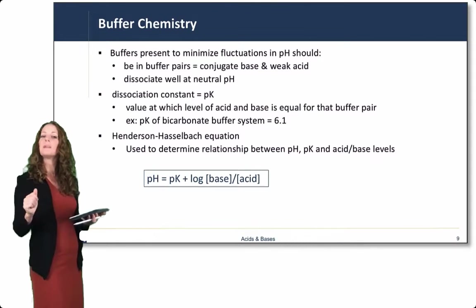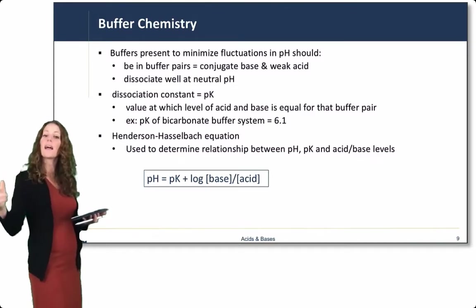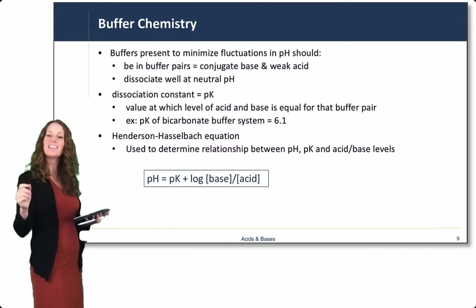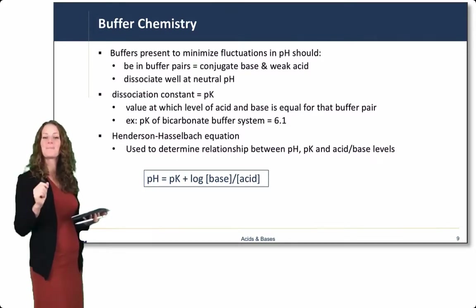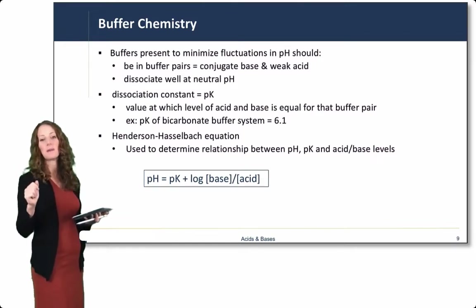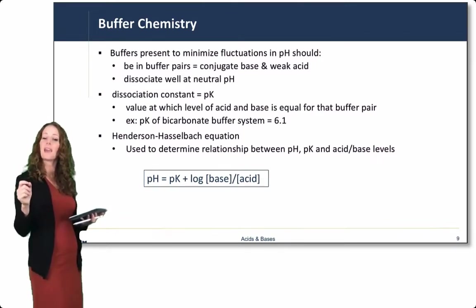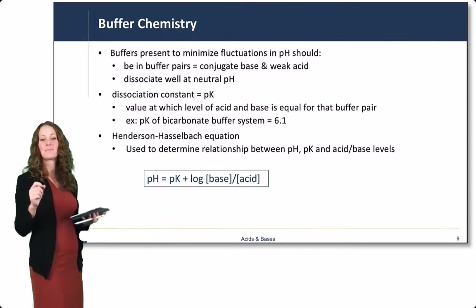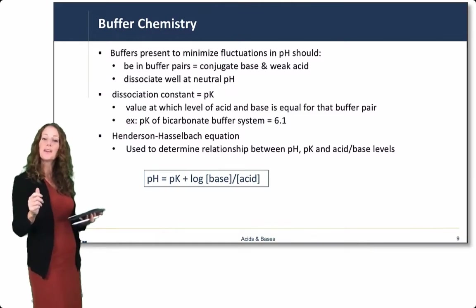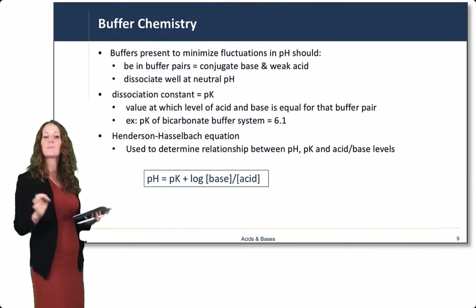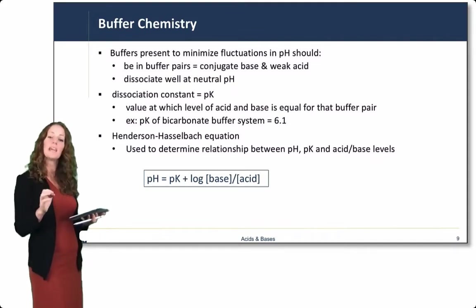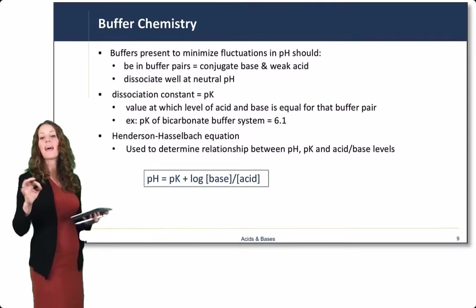So buffers are present to minimize fluctuations in pH. A good buffer should be in a buffer pair, that is a conjugate base and a weak acid. It should dissociate well at a neutral pH. The dissociation constant is called the pK. The value at which the level of acid and base is equal for that buffer pair is its pKa. The pKa of a bicarbonate buffer system is 6.1, so it's pretty good.